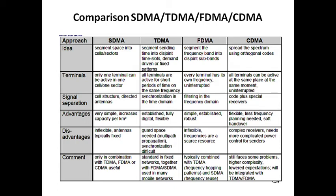For signal separation: in SDMA, a cell structure with directed antennas provides proper transmission. In TDMA, synchronization is done based on the time domain. In FDMA, it filters the frequency domain for signal separation. In CDMA, code plus special receivers are used — a code is transmitted to the destination, and the destination mobile station unlocks the code to access the data.